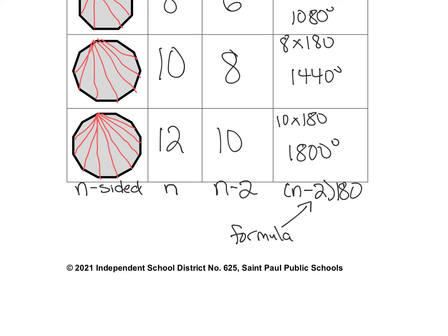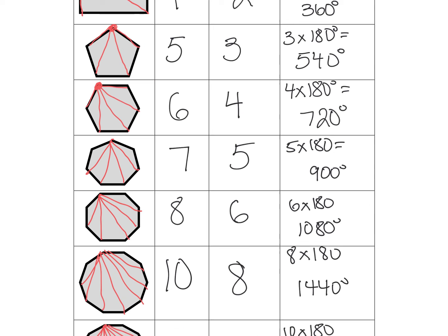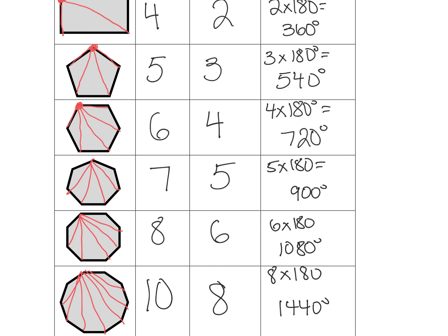And then once we know that, we can kind of use it like we did when we were doing complementary-supplementary angles or finding the missing angle in a triangle. We just find that total number of degrees and then we can take out what we know. So if we know, for example, a pentagon, if we know four of the angles, we could take... So our pentagon, there was 540. We could take 540 and subtract out what we already know and what's left would be our missing angle.